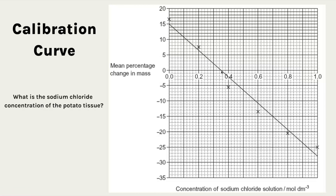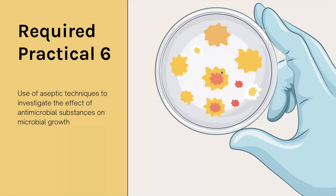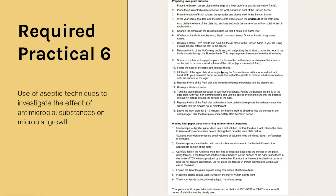Now let's move on to required practical six: the use of aseptic techniques to investigate the effect of antimicrobial substances on microbial growth. The key thing here is aseptic techniques — that's what most of the questions will link to, as well as maths. The main aseptic techniques include having your Bunsen burner close to the edge of the heatproof mat so you work close to it, meaning the air your plate is exposed to when you slightly open the lid is sterilized by the heat.